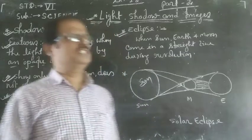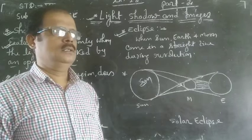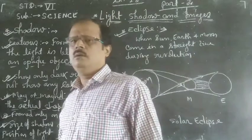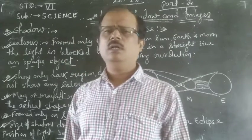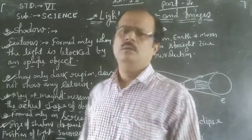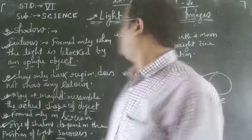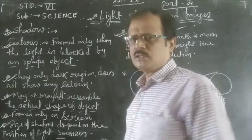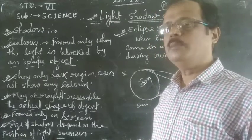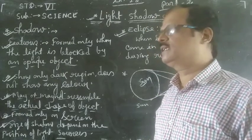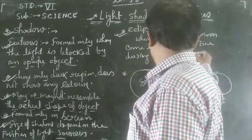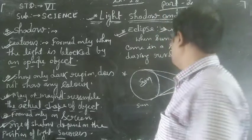The combination of these three — sun, moon and earth — gives us eclipse. Eclipse is the condition when these three bodies, sun, earth and moon, during the process of revolution, come in a straight line. This condition is called eclipse. Eclipse is also of two types: solar eclipse and lunar eclipse.